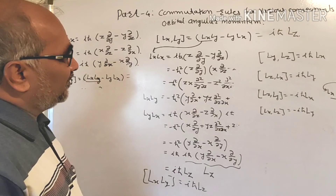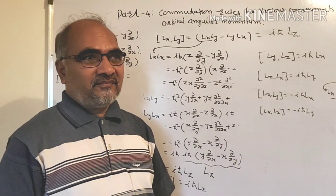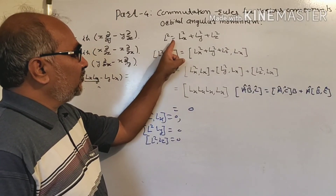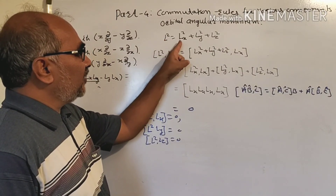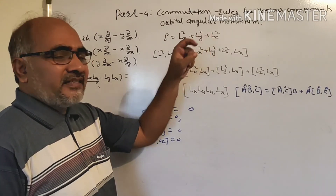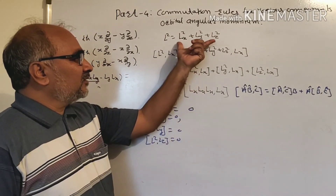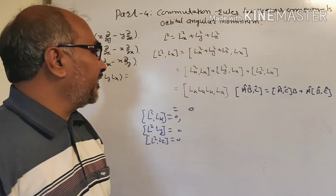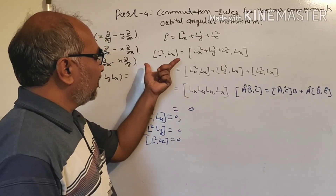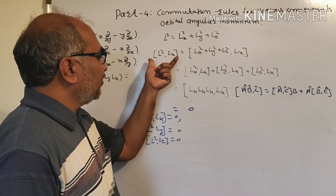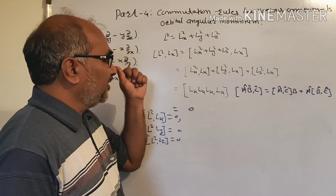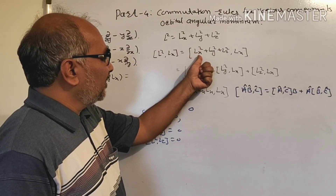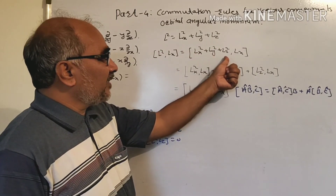There is another relation we can prove: between L² and Lx. L² is equal to Lx² plus Ly² plus Lz², these being the orbital angular momentum along the x, y, and z axes. Therefore we are going to see the commutation relation between L² and Lx. L² Lx equals (Lx² + Ly² + Lz²) with Lx.